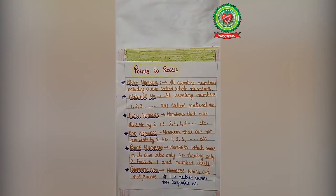Before starting, let's revise few terms that we have done in our earlier classes. Whole numbers: all counting numbers including 0, like 0, 1, 2, 3, so on.